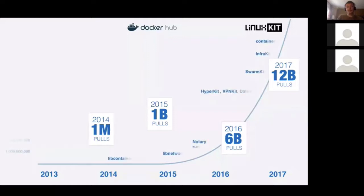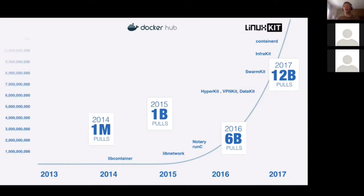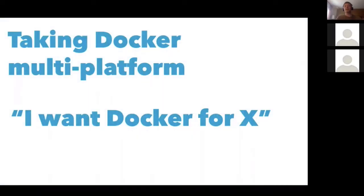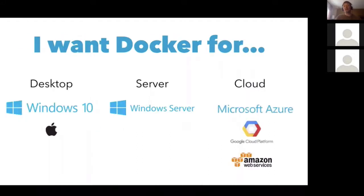As Docker became very successful over the past four years, going from one million pulls on Docker Hub to 12 billion, we extracted all these different components. One component we extracted, announced at DockerCon, and open-sourced on stage is LinuxKit. We created LinuxKit because our customers asked for Docker for X, where X was a platform that didn't have Linux — for example Windows 10, macOS X, Windows Server, Microsoft Azure, Google Cloud Platform, and Amazon Web Services.